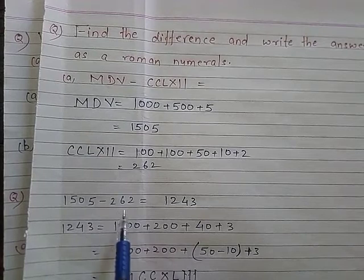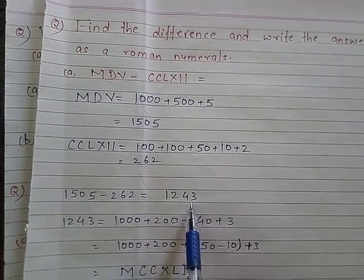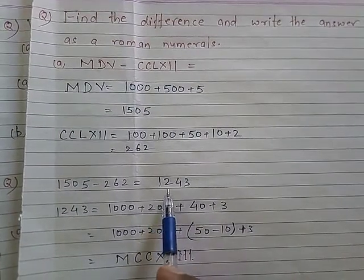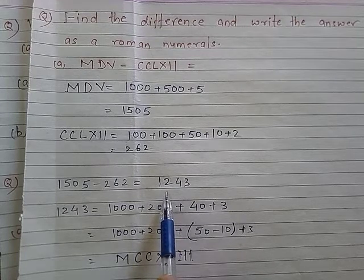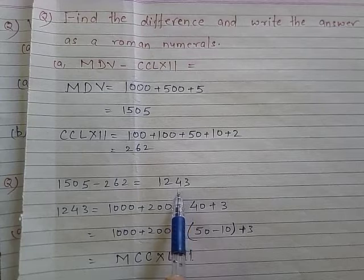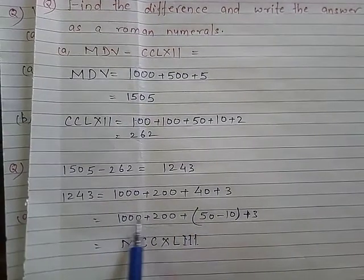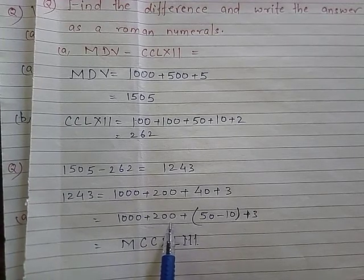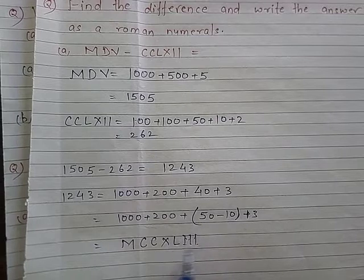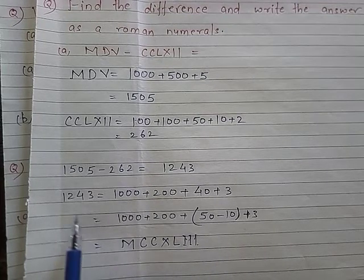Now we write 1243 in Roman numerals. We break it down as 1000 plus 200 plus 40 plus 3, which is 1000 plus 200 plus (50 minus 10) plus 3. M is used for 1000, CC for 200, XL for 40 (since 50 minus 10), and III for 3. So 1243 is written as MCCXLIII.